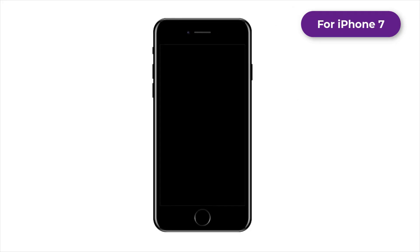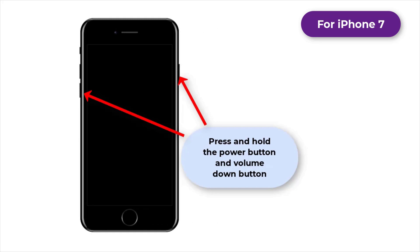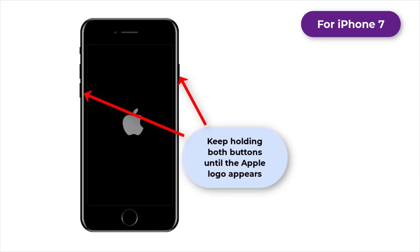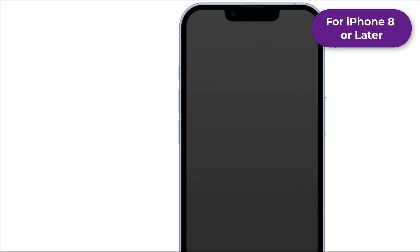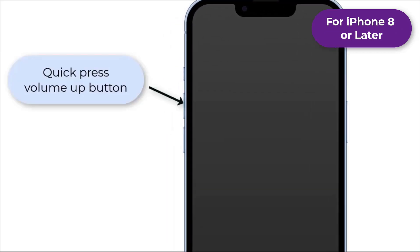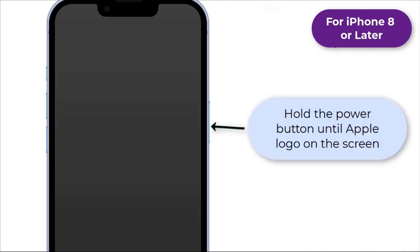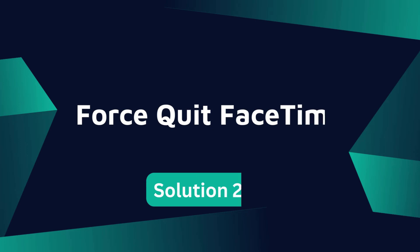For iPhone 7, press and hold the power button and volume down button, then keep holding the buttons until the Apple logo appears. For iPhone 8 or later, press the volume up button first, then quickly press the volume down button, and finally press and hold the power button until the Apple logo appears.